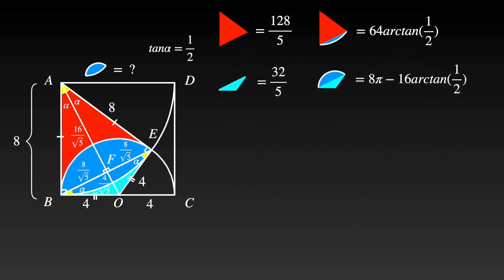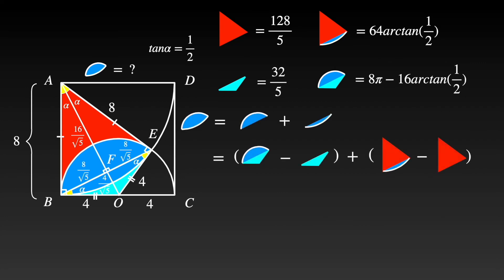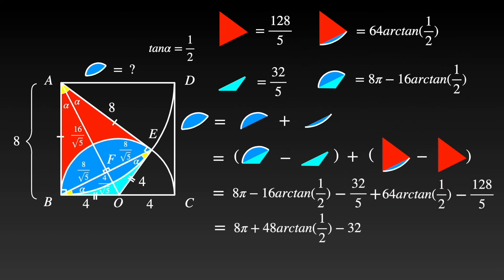Now we have all the shapes required. Substituting the numbers in, the area of the blue shape is equal to 8π + 48 × arctan(1/2) − 32. And that's the right answer. Thank you for watching this video. I will solve other math problems in my next videos. If you are interested in solving math problems, please subscribe to the channel and follow my videos. See you next time. Bye-bye.